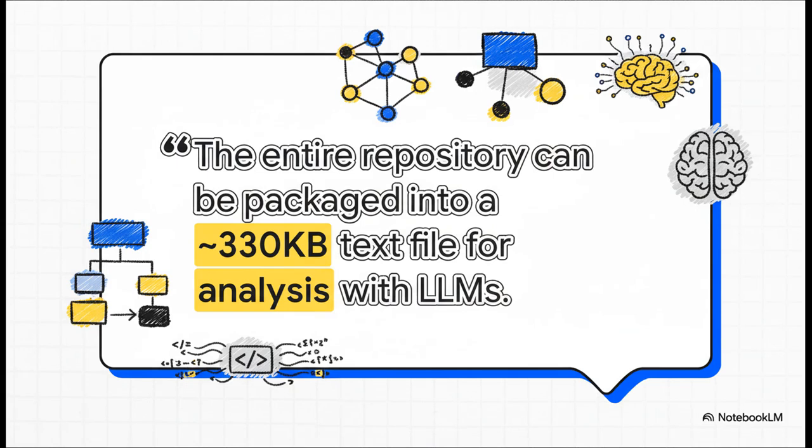And if you need one final, mind-blowing fact to really get how simple this is, here it is. The entire code base can be zipped up into a single text file that's only about 330 kilobytes. That's smaller than a lot of pictures on your phone. The whole blueprint for a ChatGPT-like AI, small enough to analyze in one go. That's incredible.